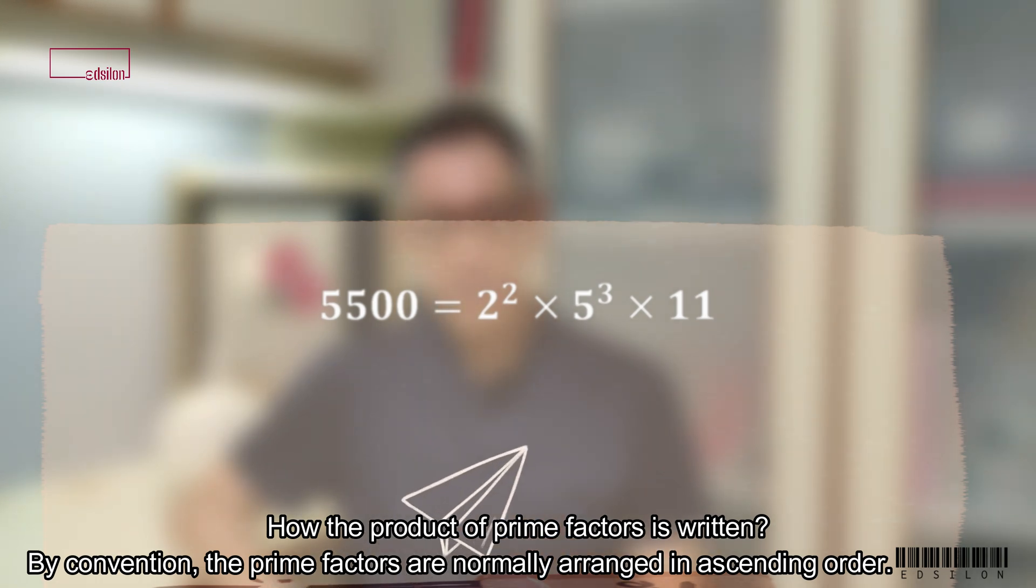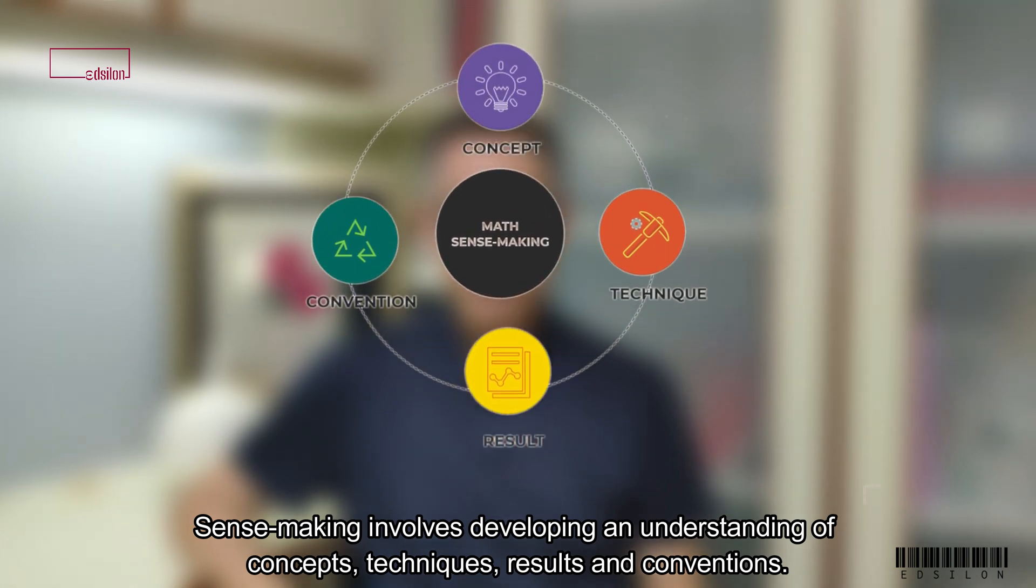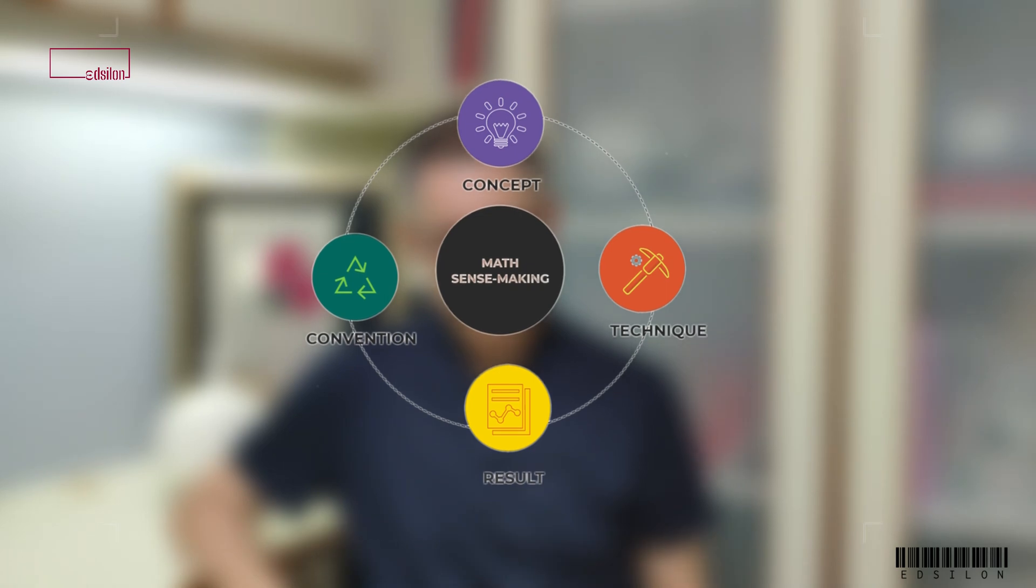How the product of prime factors is written. By convention, the prime factors are normally arranged in ascending order. Sense making involves developing an understanding of concepts, techniques, results and conventions.